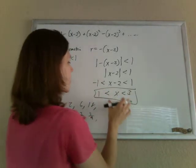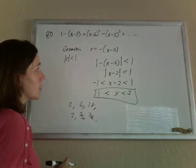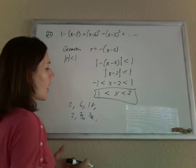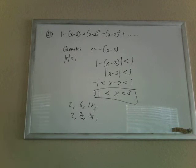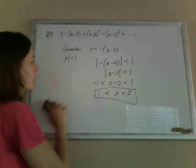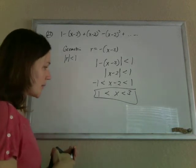So those are the values of x for which that sequence will converge. And if you want to test it, let's test it. On the test, you'd be done, but if you're curious about what the heck this thing means, because it looks a little abstract,